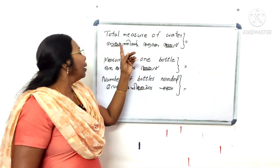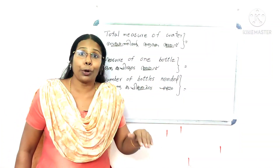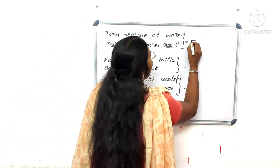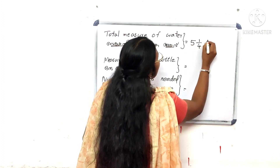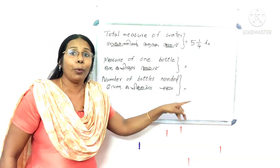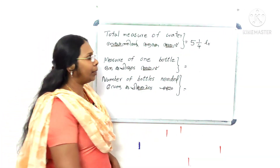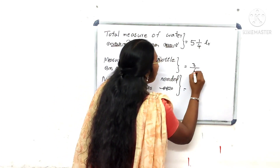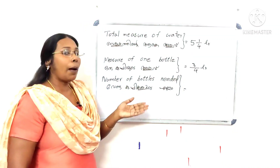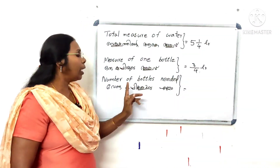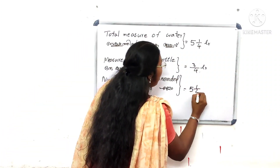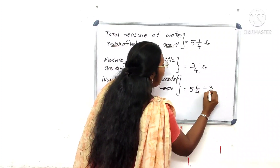Step 1: The total measure of water is 5 and 1/4 liters. The measure of 1 bottle is 3/4 liter. Number of bottles needed — what is the number of bottles needed? We will do 5 and 1/4 divided by 3/4.